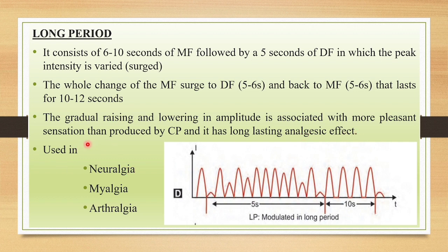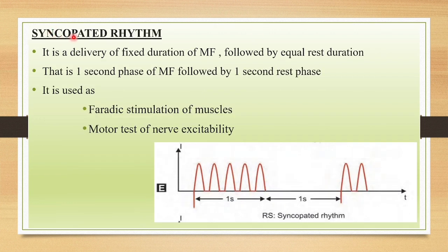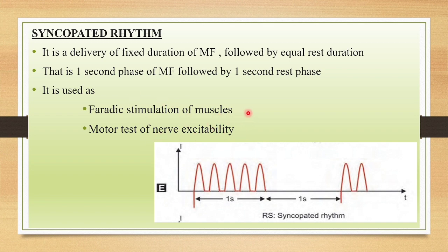The long period mode is mainly used for treating pain-related issues like neuralgia, myalgia and arthralgia. The last mode is syncopated rhythm — a delivery of fixed duration of monophase followed by an equal rest duration. One second of monophase is followed by one second of rest period. This can be used for faradic stimulation of muscles and motor testing of nerve excitability.